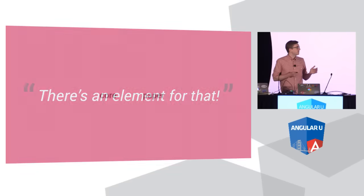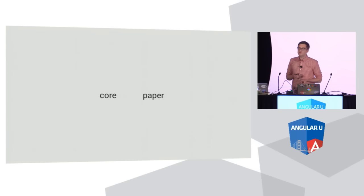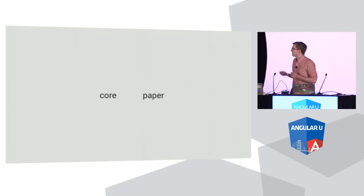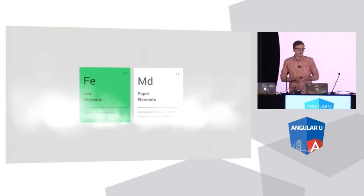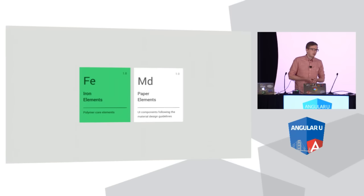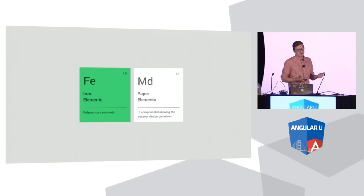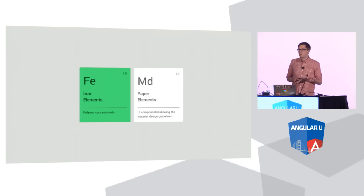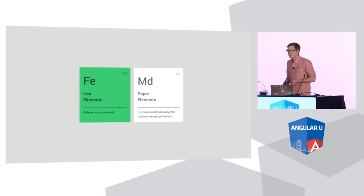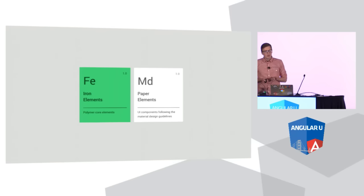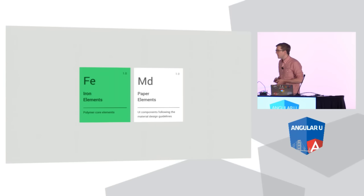On the Polymer team, along with writing the core library, we've also been working on element sets which we call product lines. Many of you may be familiar with the core and paper elements that the Polymer team has produced. With Polymer 1.0, we've actually updated these sets — the core elements have been renamed to iron elements, which provide the basic building blocks for your application. And the paper elements are our implementation of material design for the web.